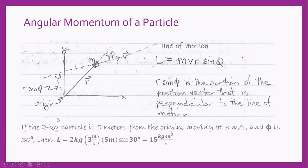Here's an example of how we would calculate angular momentum for a particle. This particle has a mass of two kilograms, it's five meters from the origin, it's moving at three meters per second, and the angle phi is 30 degrees. We plug those quantities into the equation and find that this particle has an angular momentum of 15 kilogram meters squared per second.